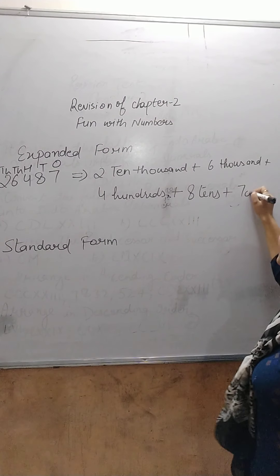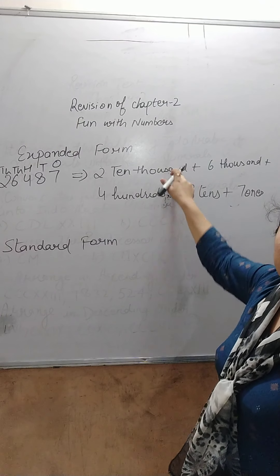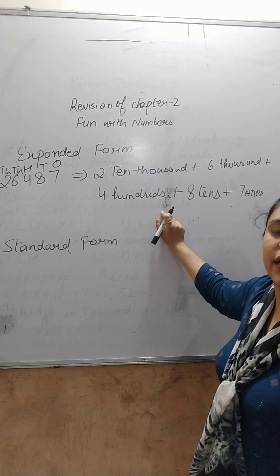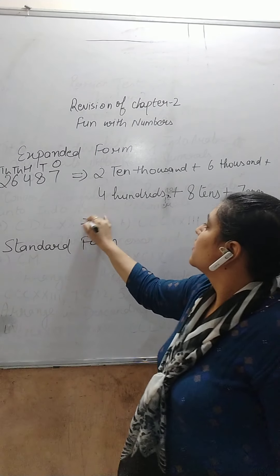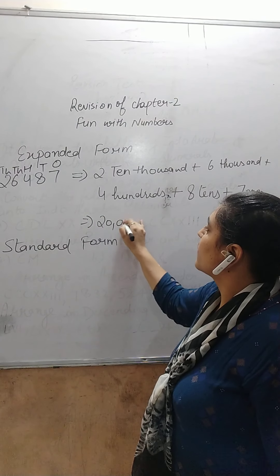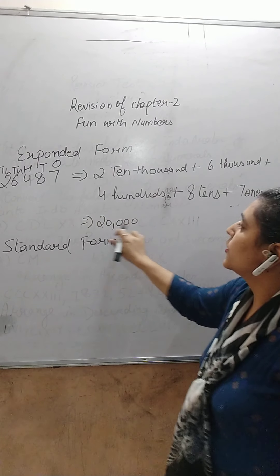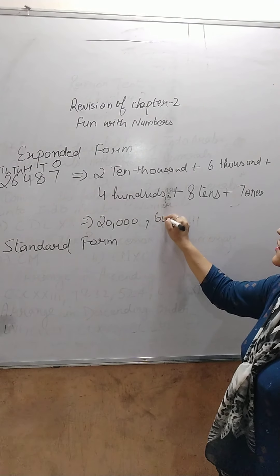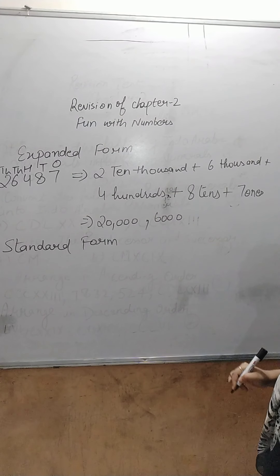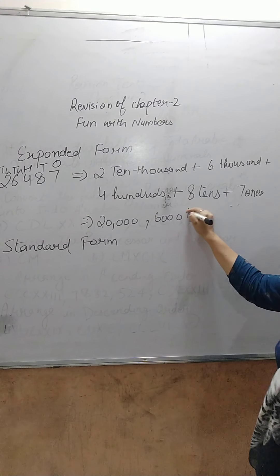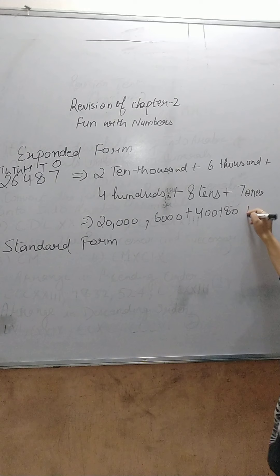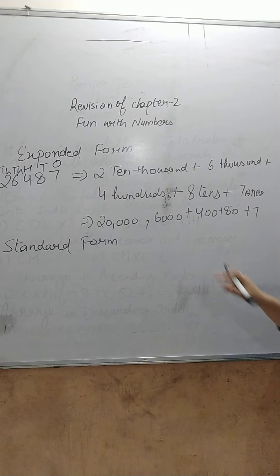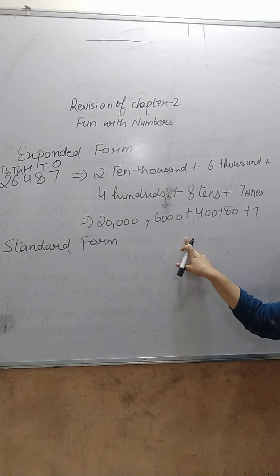7 is on the 1's place. So the expanded form becomes: 20,000 + 6,000 + 400 + 80 + 7. In this way we write expanded form.